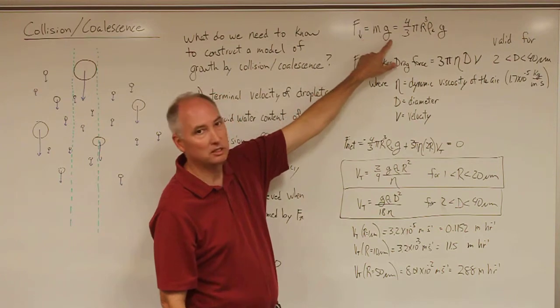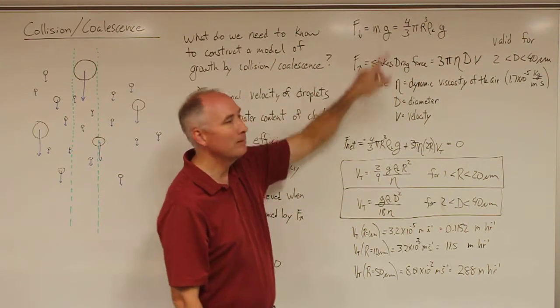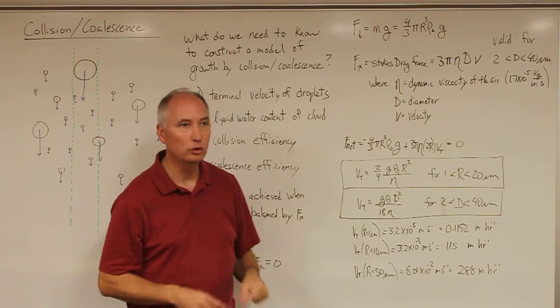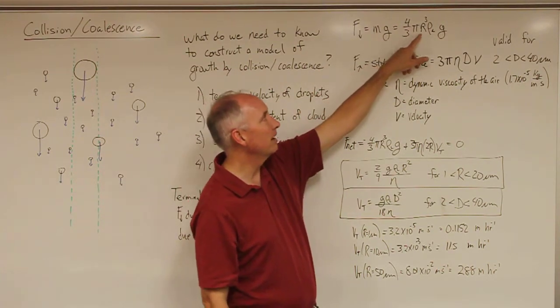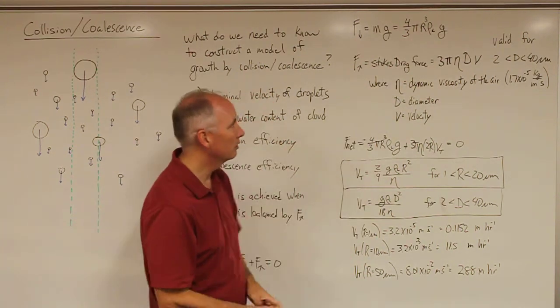We just have force is equal to mass times acceleration where g is the gravity constant. We know the mass of our droplet because these are spherical cloud droplets. So the mass is 4/3 π r³, which is the volume times the density of liquid water times gravity.